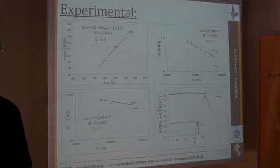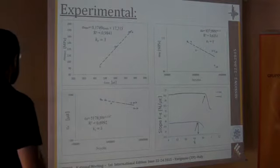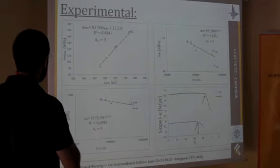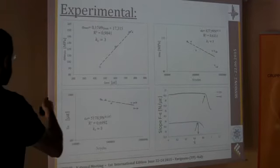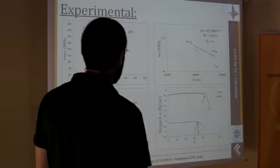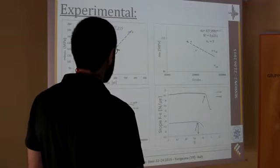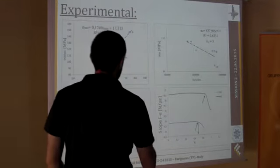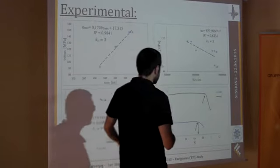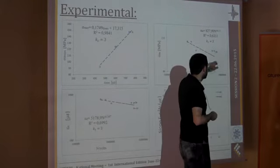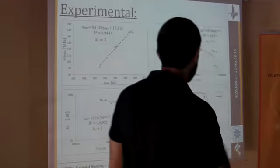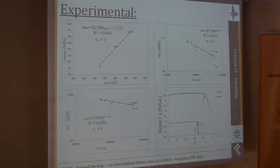So here we have some experimental results. These are simply the stress versus strain, which is almost linear because we are working, of course, in the elastic region. Here we have the stress versus number of cycles, and as you can see, we have observed that two samples were not broken at the end of the test, but were stopped at 5 million cycles.